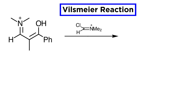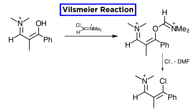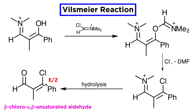This can actually react again with another Vilsmeier reagent, but because the beta carbon of the enol is already heavily substituted, it reacts at the enol oxygen, yielding this intermediate. Then a chloride ion attacks this position on the unsaturated iminium, leading to expulsion of one molecule of DMF. And finally, after mild hydrolysis, the beta-chloro-alpha-beta unsaturated aldehyde is achieved as a mixture of E and Z geometric isomers.